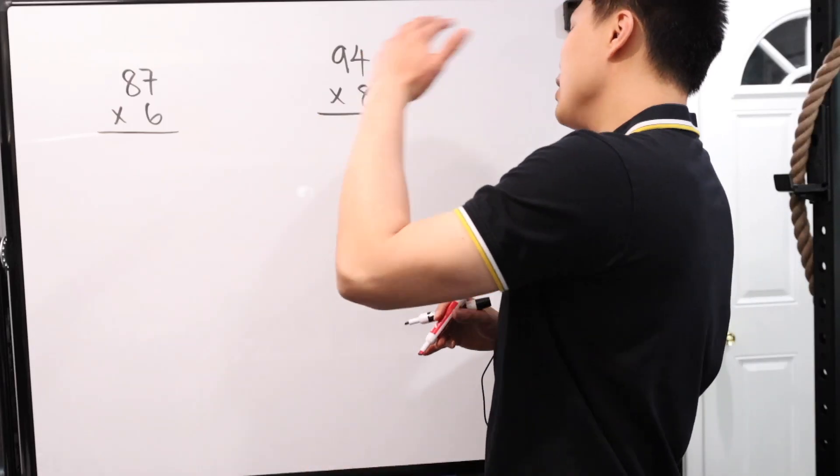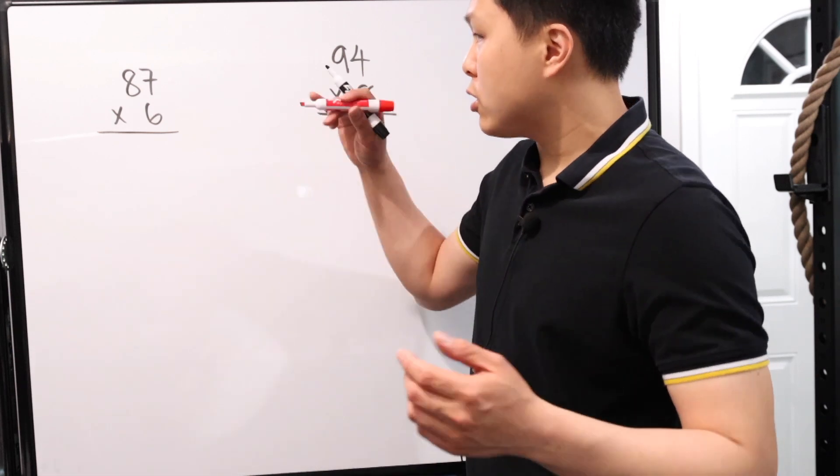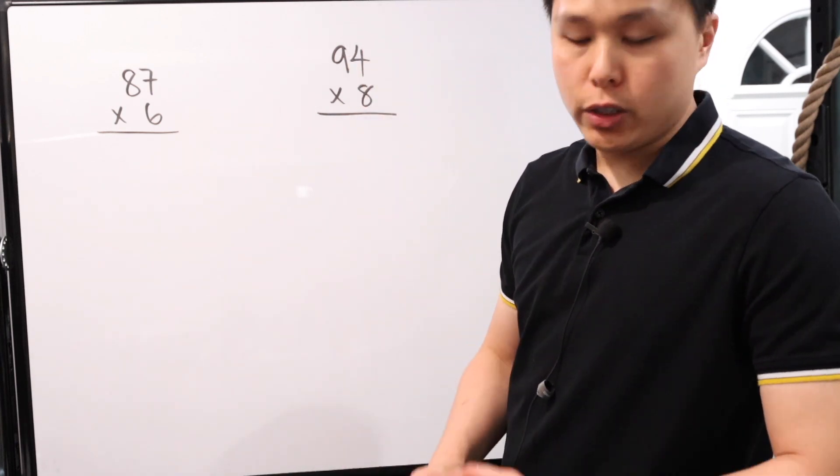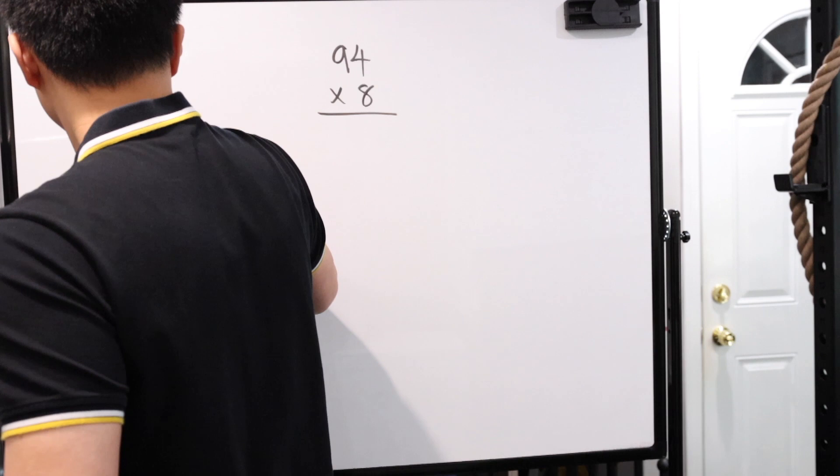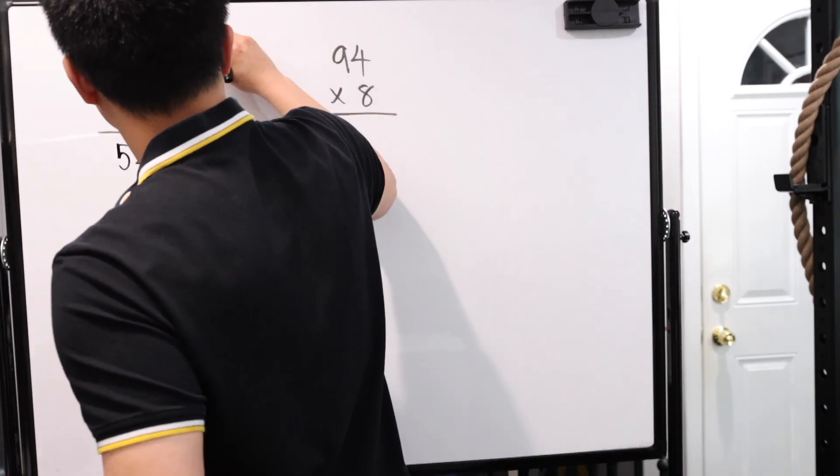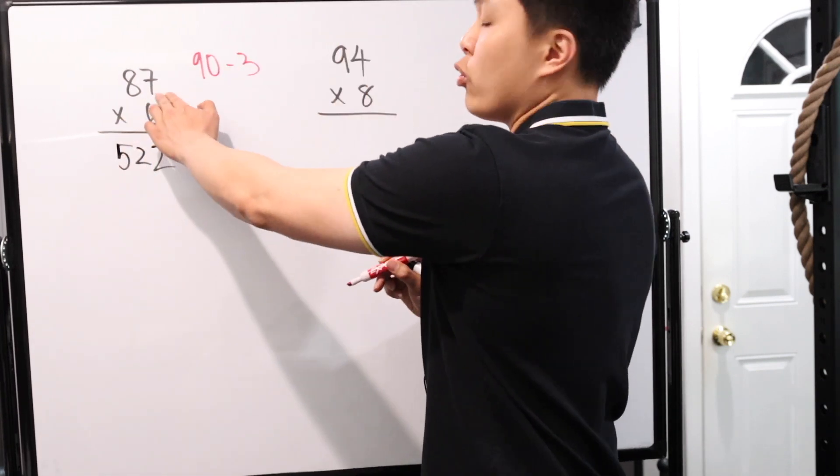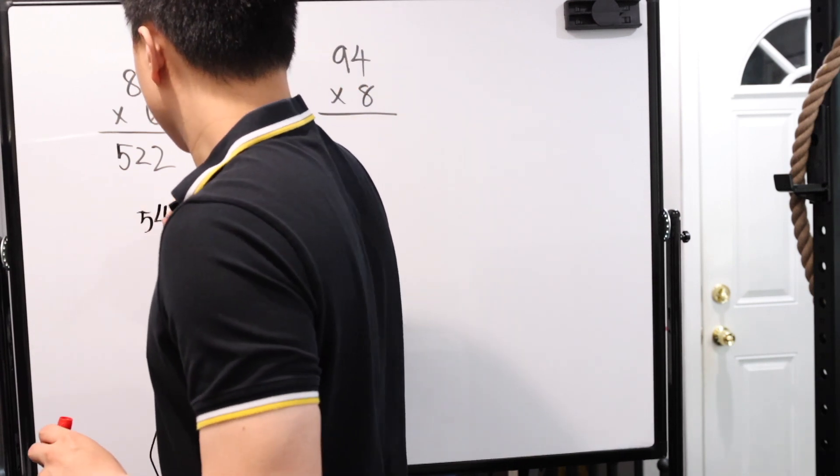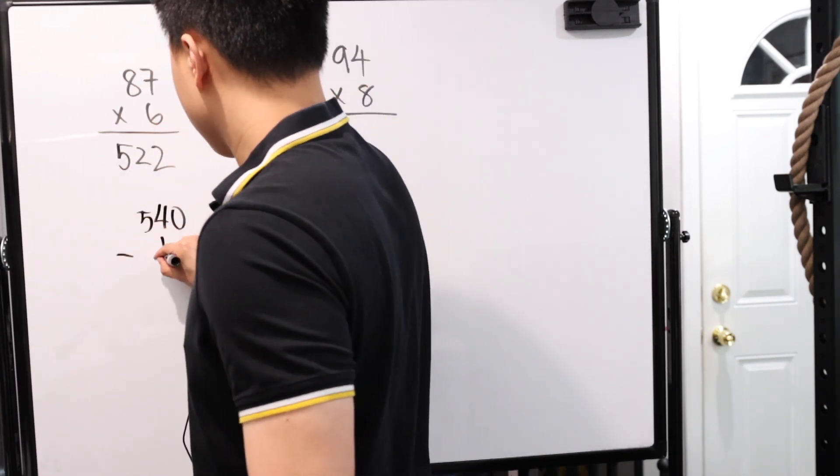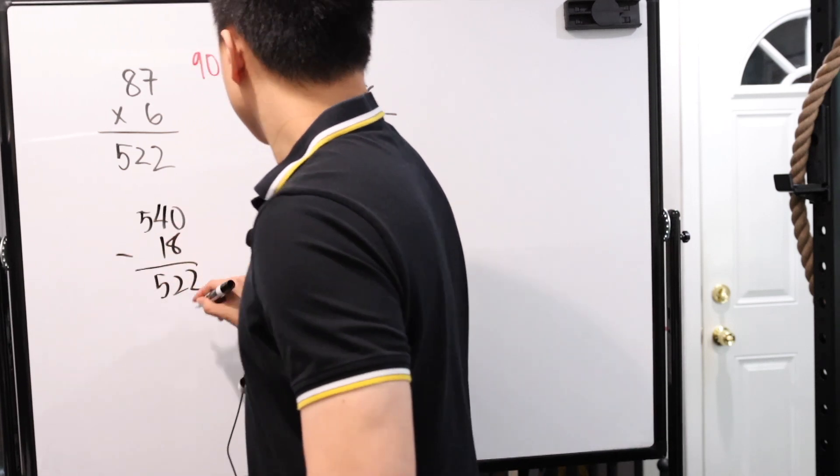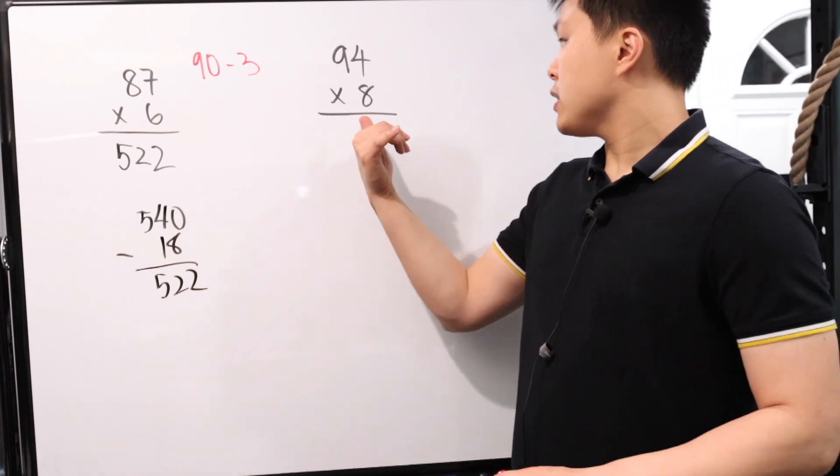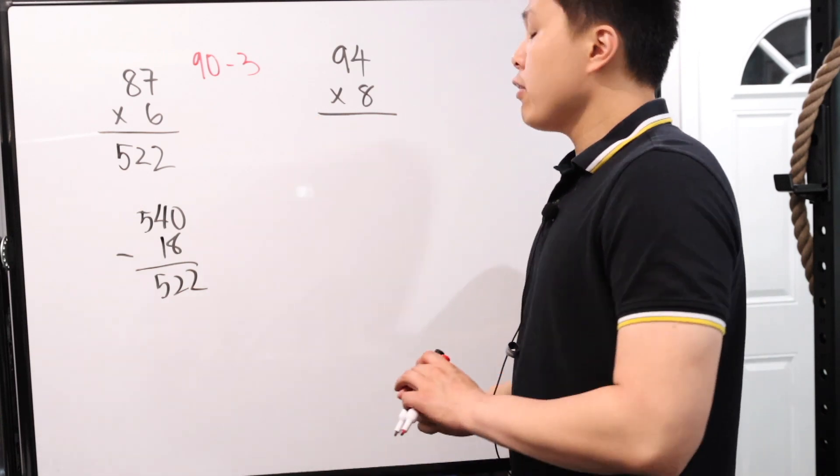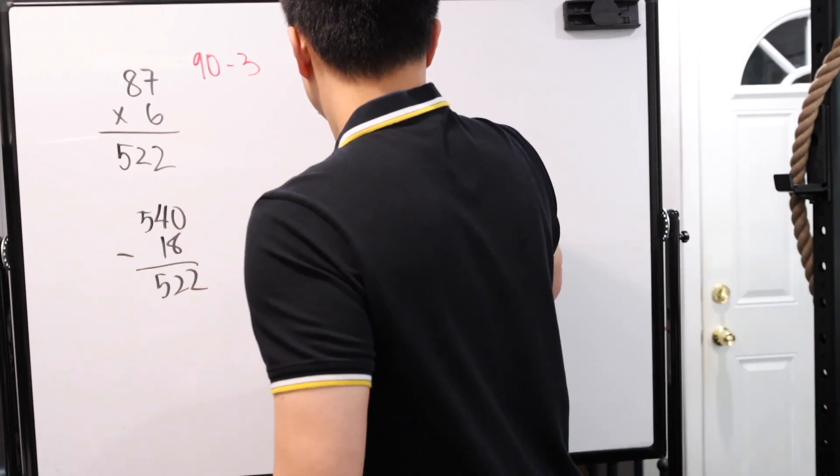All right. So here we have it. We have another two examples. 87 times 6. That's just basically 90 times 6 is 540 minus 6 times 3. That's 18. That's 522. So we have 522 right here. And then of course, once again, I just broke this down into 90 minus 3, because this one is bigger than five. And of course, now you can see it 90 times 6 is going to be 540. And then of course, you subtract the 6 times 3, which is going to be 18. And that's why we have 522. Let's look at this one.